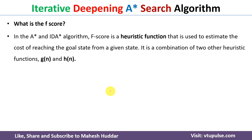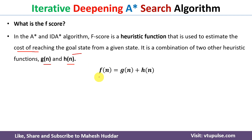The heuristic function is used to calculate the f-score, which is used to estimate the cost from the given state to the goal state. It is a combination of two things: one is known as g(n) and another one is known as h(n). The heuristic function is given as f(n) = g(n) + h(n). To understand this, we will take one simple example. Let's say there are four nodes: A, B, C, and D.